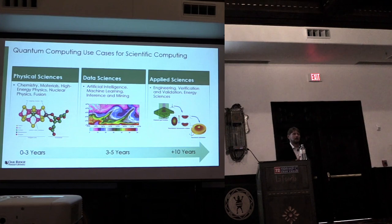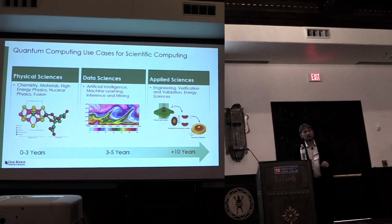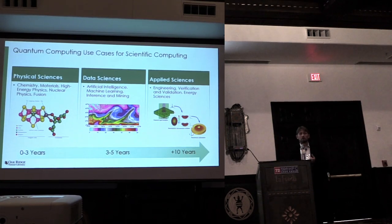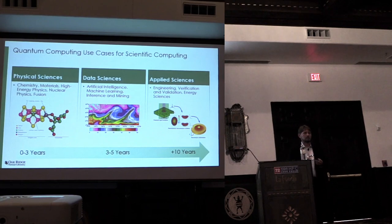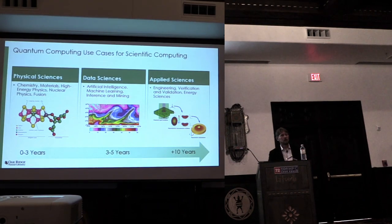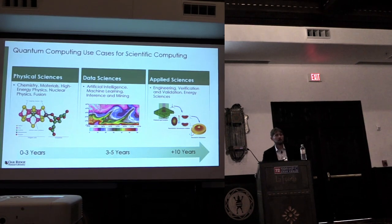In terms of what I think quantum computing is going to be useful for, I'm going to call out three specific use cases for scientific computing. The first we're already doing. This is physical sciences. This is chemistry, high energy physics, materials. I'll actually give you some demonstrations in a moment of ways we're using quantum computing to solve these problems today. They may not yet be competitive with conventional approaches. Certainly not competitive with high performance computing codes. But we're at the point now where we can start thinking of a path where they could be.